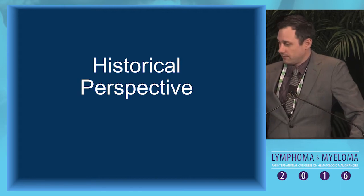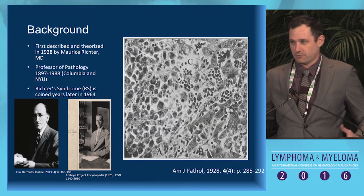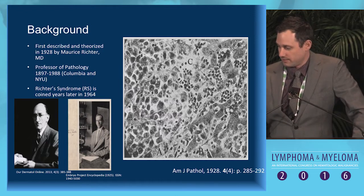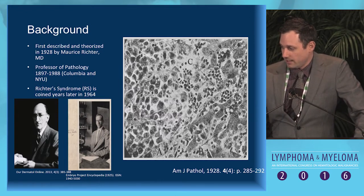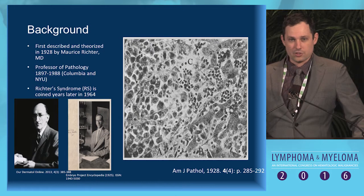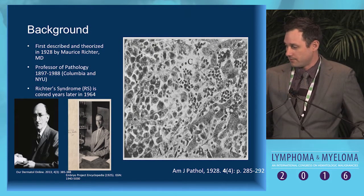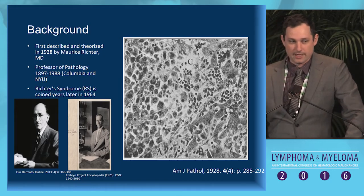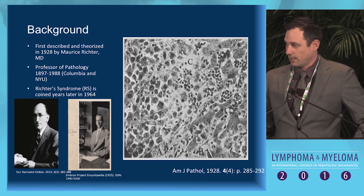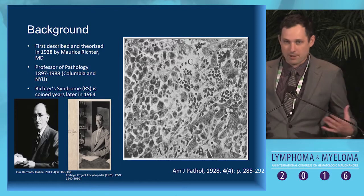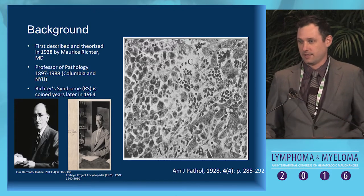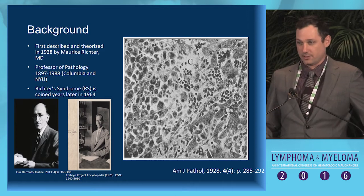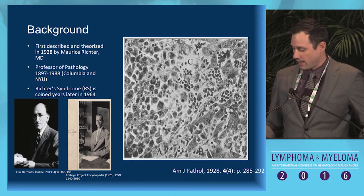For historical perspective, you can never give a Richter's talk in New York City without understanding that Dr. Richter was a citizen of our good city. He was a professor of pathology in command of the pathology departments at Columbia and NYU. In 1928, he essentially published the first case and hypothesized for the first time that two hematologic malignancies in the same patient could potentially be arising from each other.